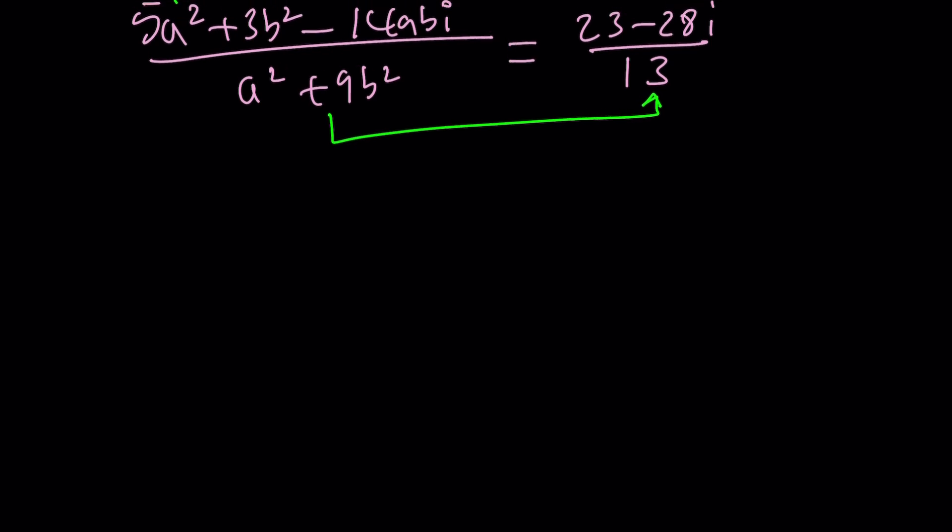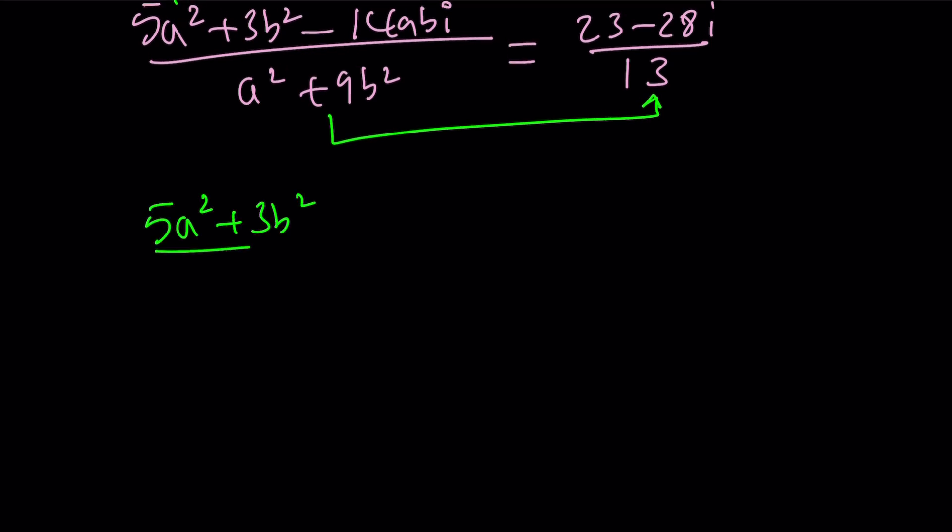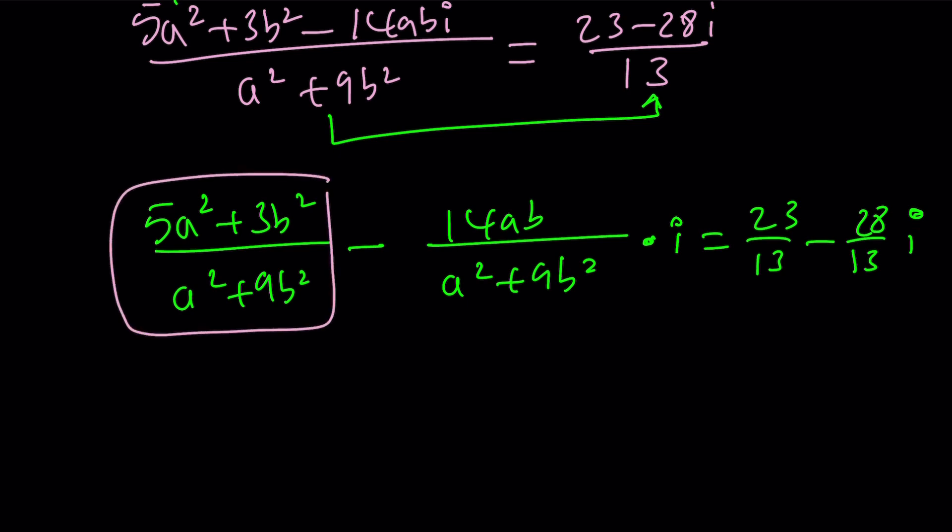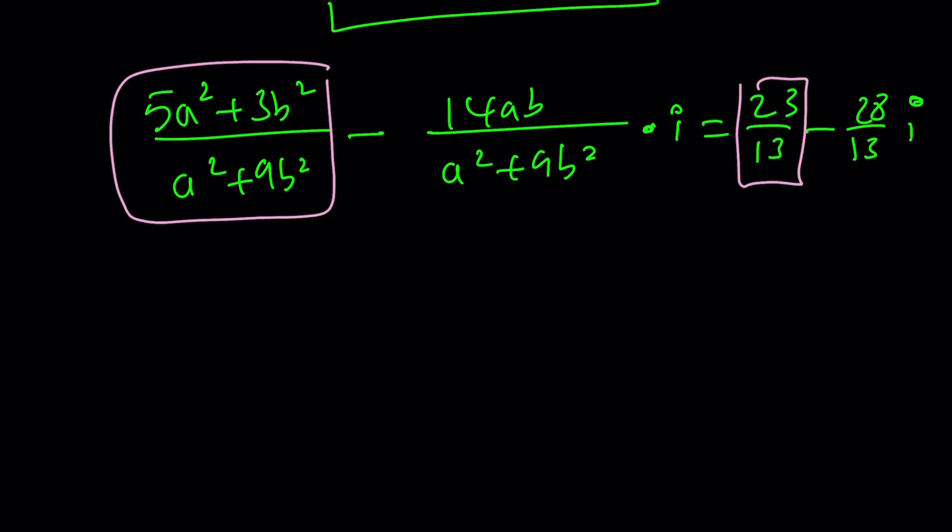Now we can also go ahead and write it this way. 5a squared plus 3b squared divided by a squared plus 9b squared. And then minus 14ab over a squared plus 9b squared. And then the whole thing is multiplied by i. And this equals 23 over 13 minus 28 over 13i. So we can kind of make a one-to-one correspondence. This equals this.